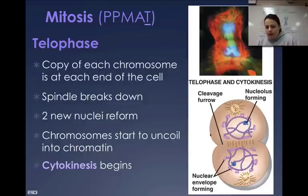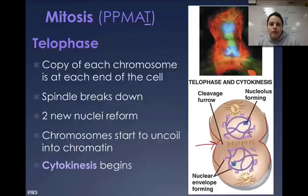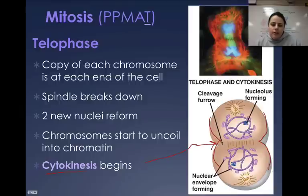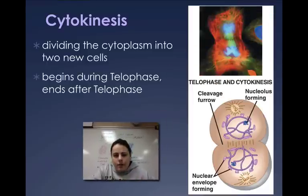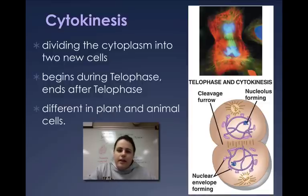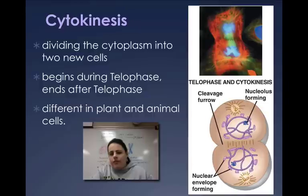As telophase is happening, the cell starts to pinch in. This pinching is called cytokinesis — the splitting of the cytoplasm and the rest of the organelles. It happens simultaneously with the end of telophase, and the cell will just split and pinch right in half to give two new identical cells. Cytokinesis happens a little differently in plant versus animal cells.